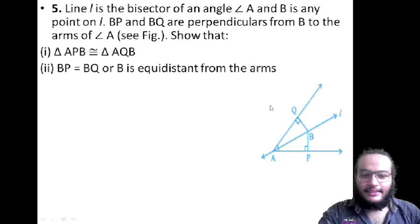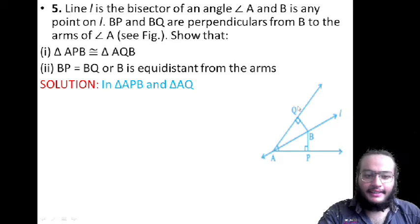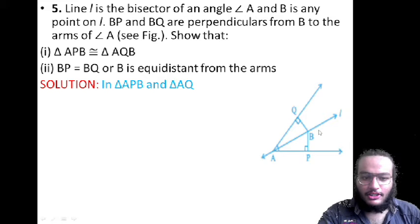Now, let us consider triangle APB and triangle AQB. In these triangles, angle QAB should be equal to angle PAB since L is the angle bisector of angle A.